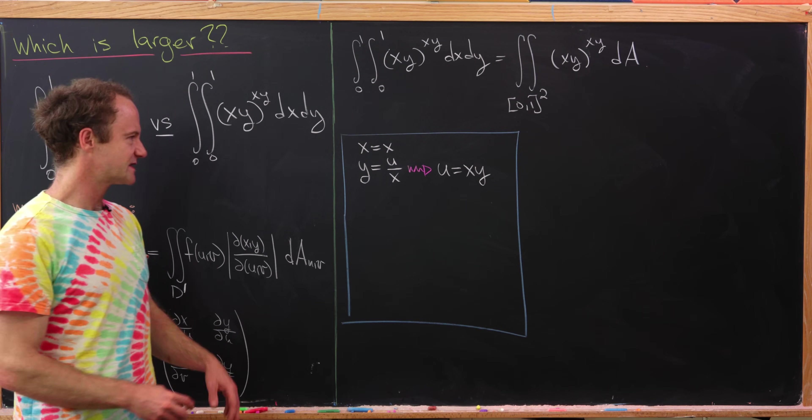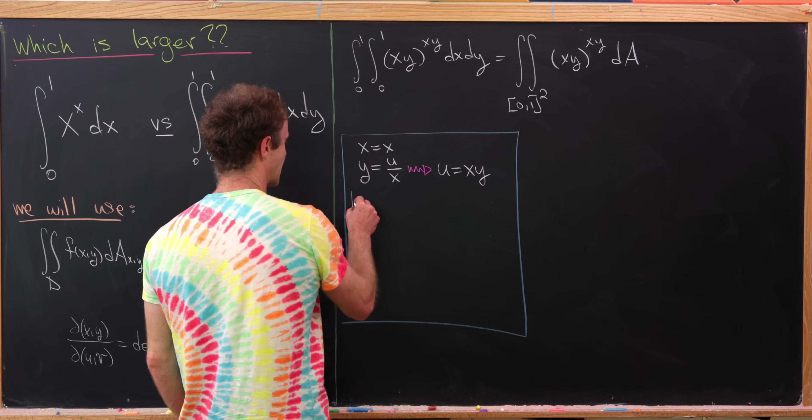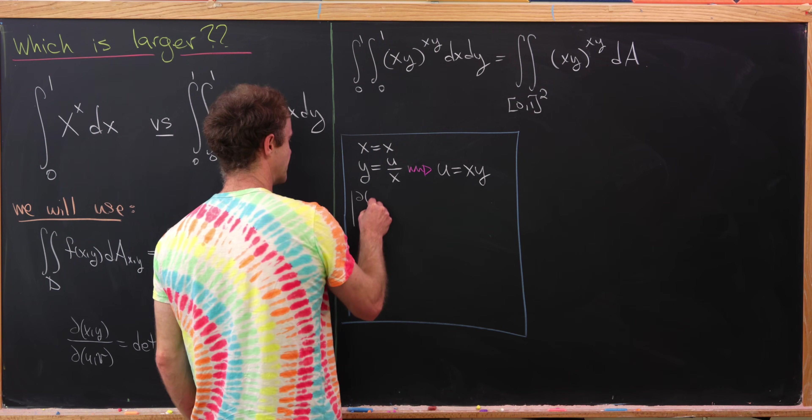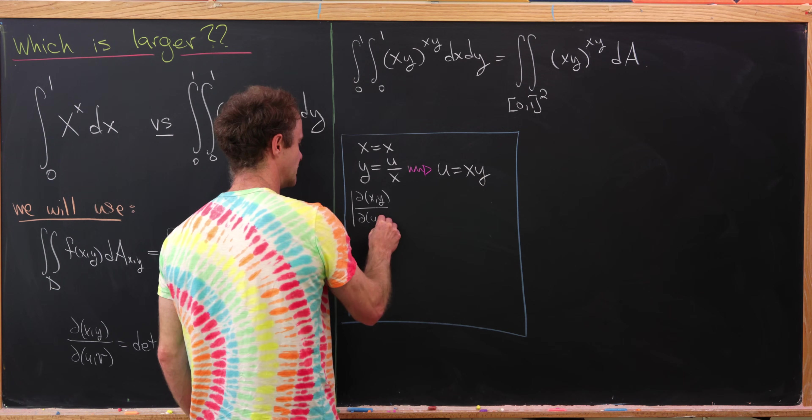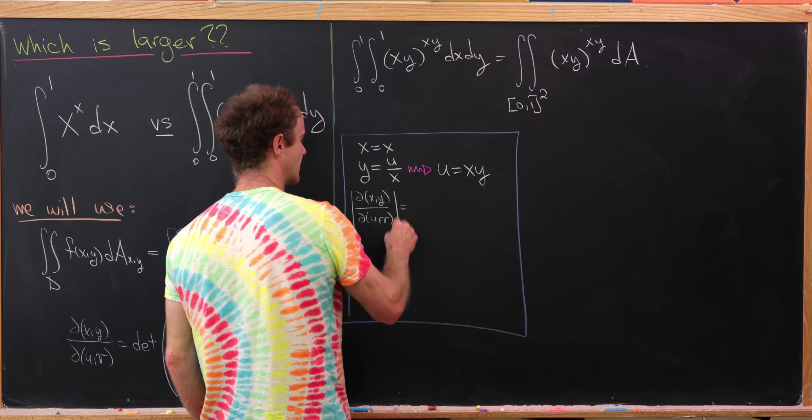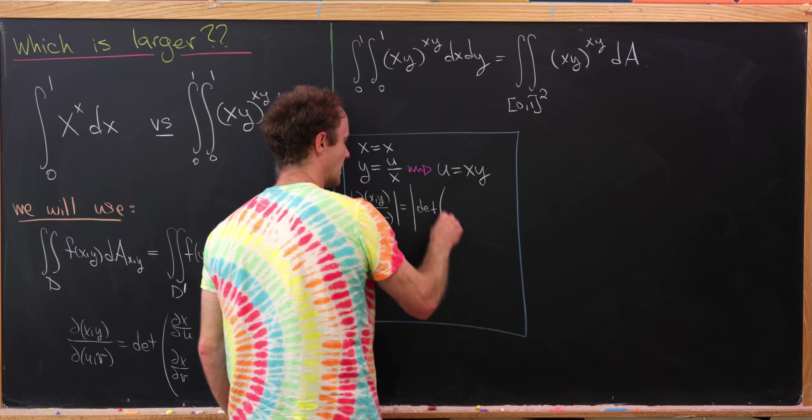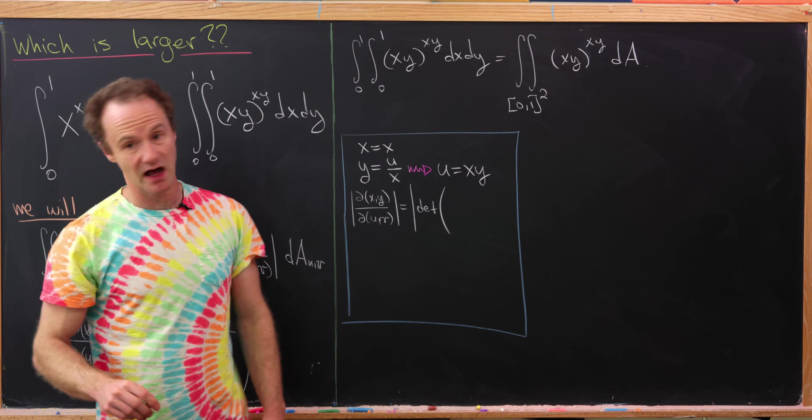Now let's calculate our Jacobian. We've got the absolute value of the determinant of this matrix. So we have partial x, partial u. That's going to be the absolute value of the determinant.